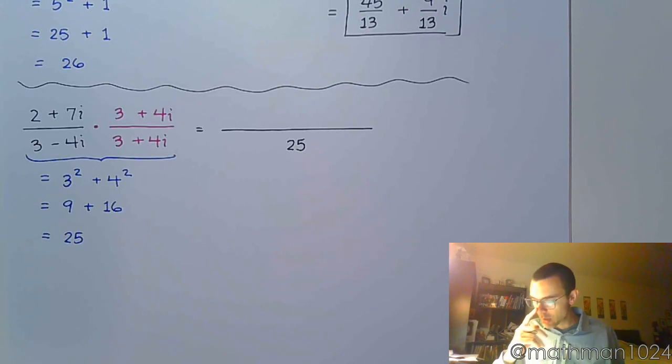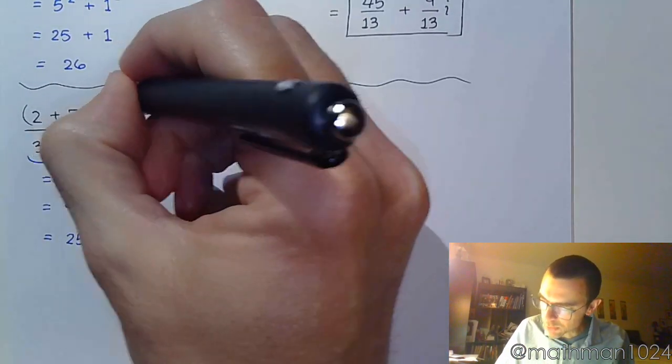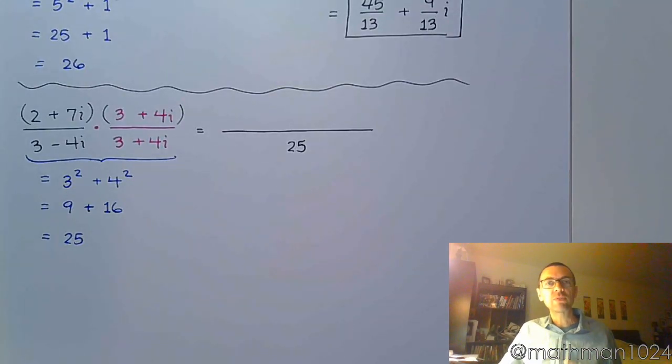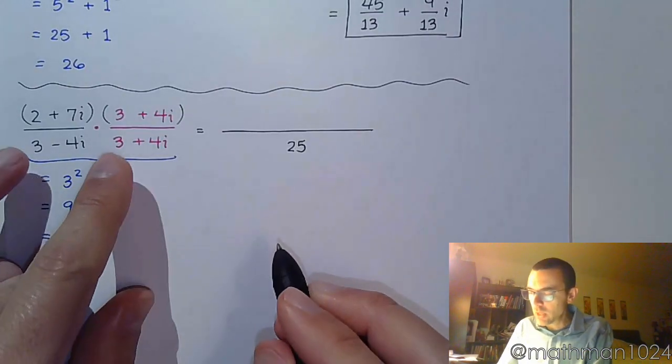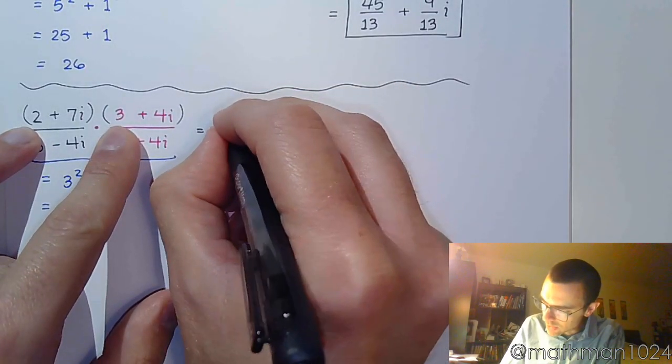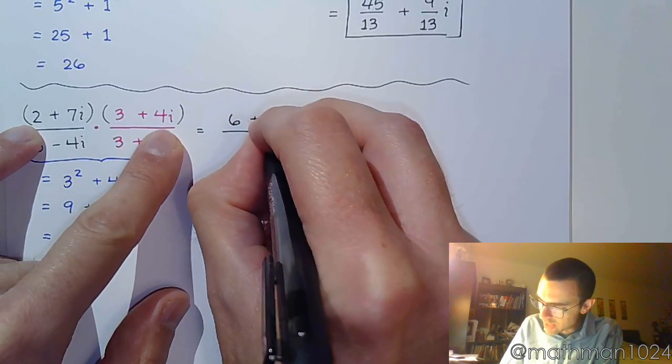Well, what about the numerator? This is a product, and it's a product of two complex numbers. So we have to FOIL just like we've done before. So when I FOIL, 2 times 3 is 6. 2 times 4i is 8i.